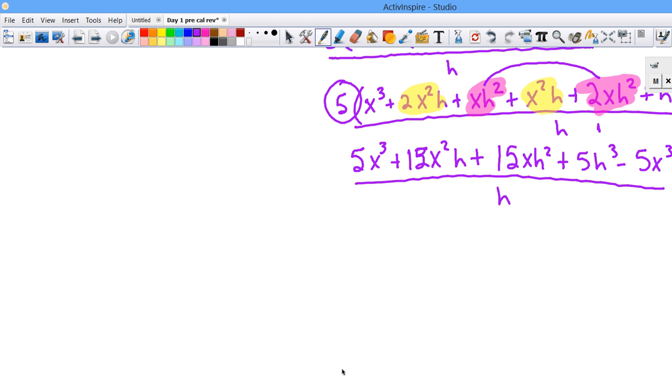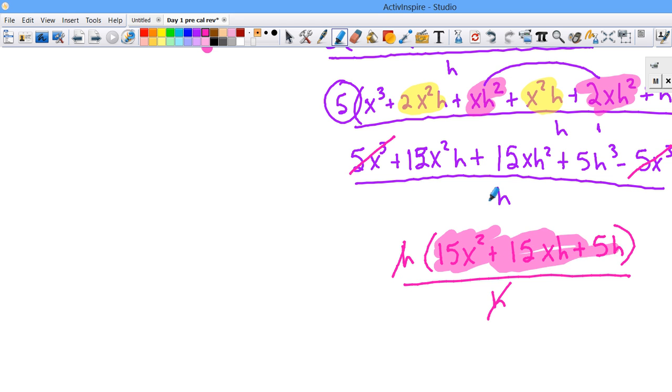So now we have these two. What you didn't do is you didn't cancel these. Now I can take out an h. So I got 15x squared plus 15xh plus 5h over h and kill the h's. And this is essentially my answer right there, and that's what you want to have at the end.